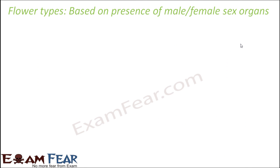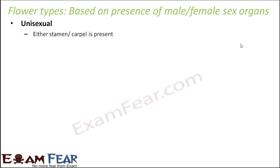It is not only the arrangement of petals or sepals that matters — even how the male or female sex organs are present in a flower can be used to classify flowers. Some flowers are unisexual, meaning either the stamen or the carpel is present. Stamen is the male reproductive part and carpel is the female reproductive part.